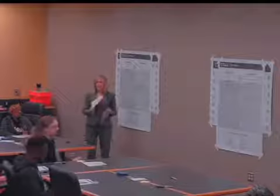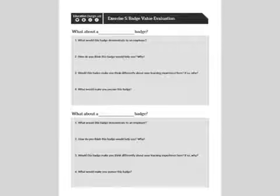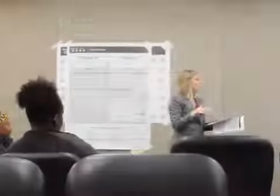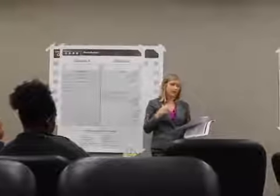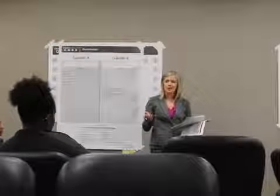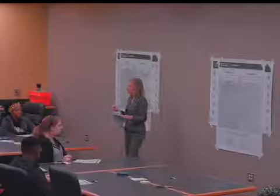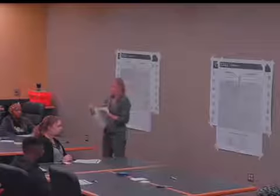Let's turn to the next page in your workbook. This is going to be exercise five — the Badge Value Evaluation. Because Tusk University really does believe in the possibility of badging, we're interested in designing our own badge, and our plan is to do that with your feedback. We'd like for you to take about ten minutes to answer the questions on exercise five.